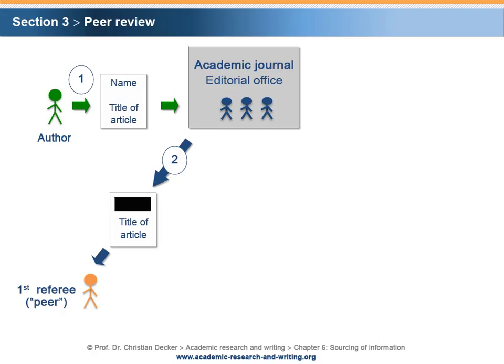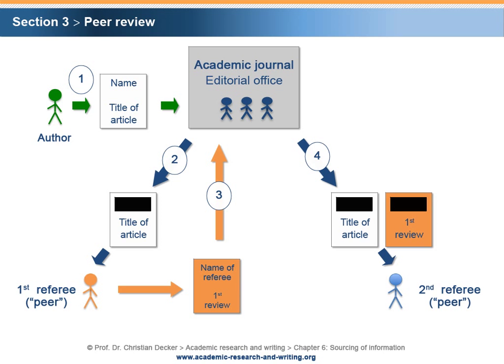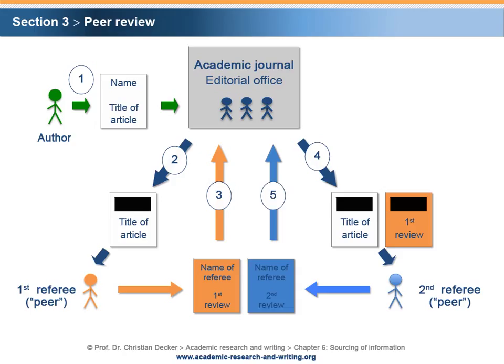The first referee appraises the article and sends the first review to the editorial office of the academic journal. If the first review is positive, the editorial office sends the anonymized article, together with an anonymized version of the first review, to a second referee. Again, the second referee is an accredited scholar in the field of knowledge addressed in the article. The second referee appraises the article and the first review in order to write a second review for the editorial office of the academic journal.